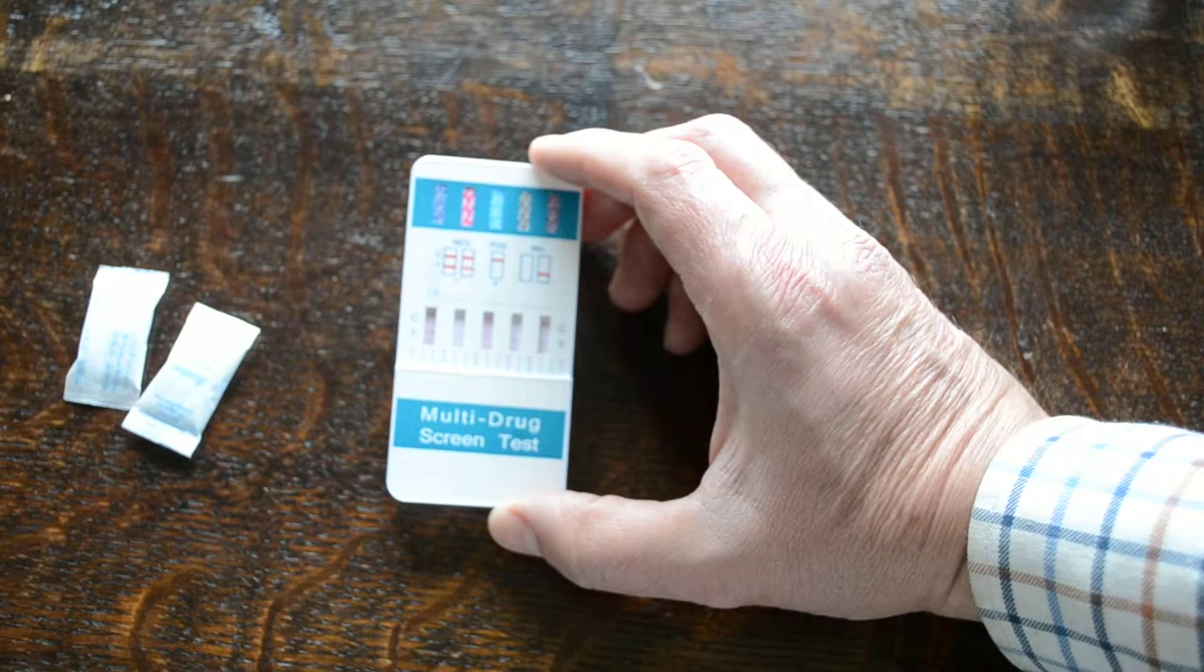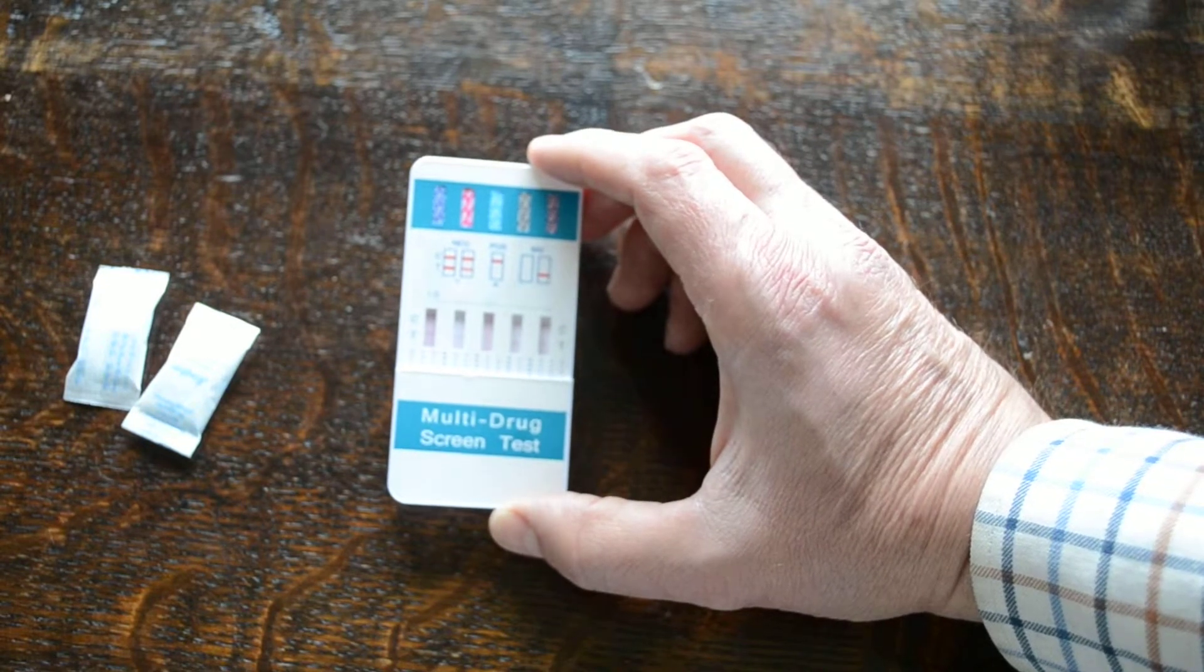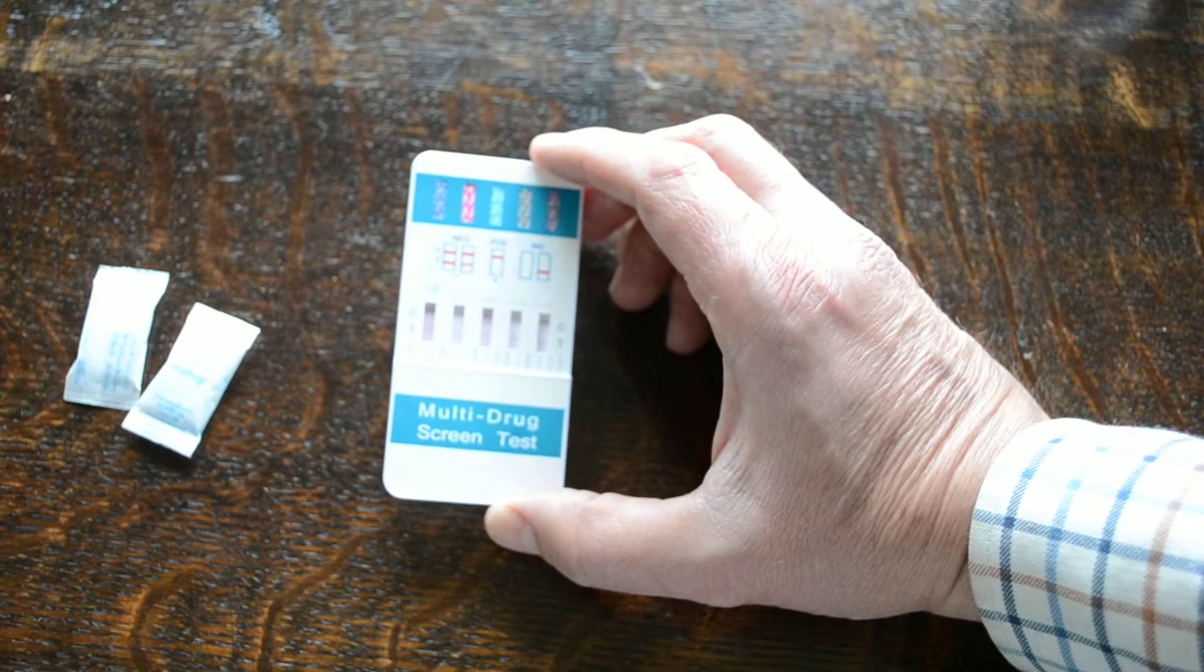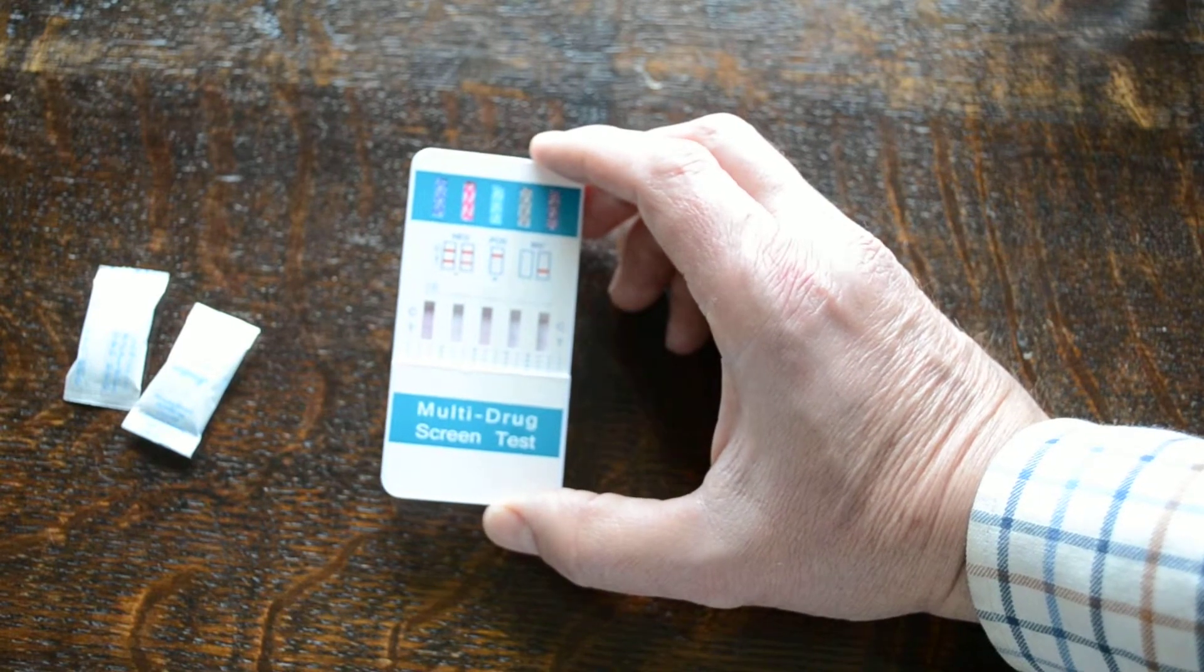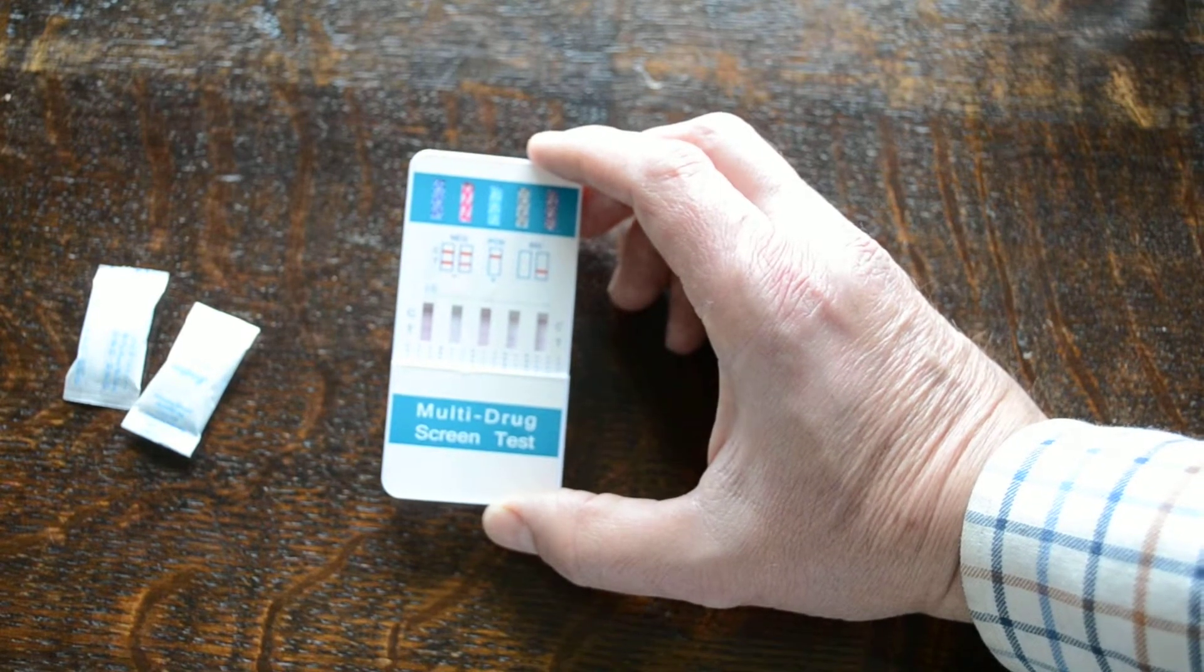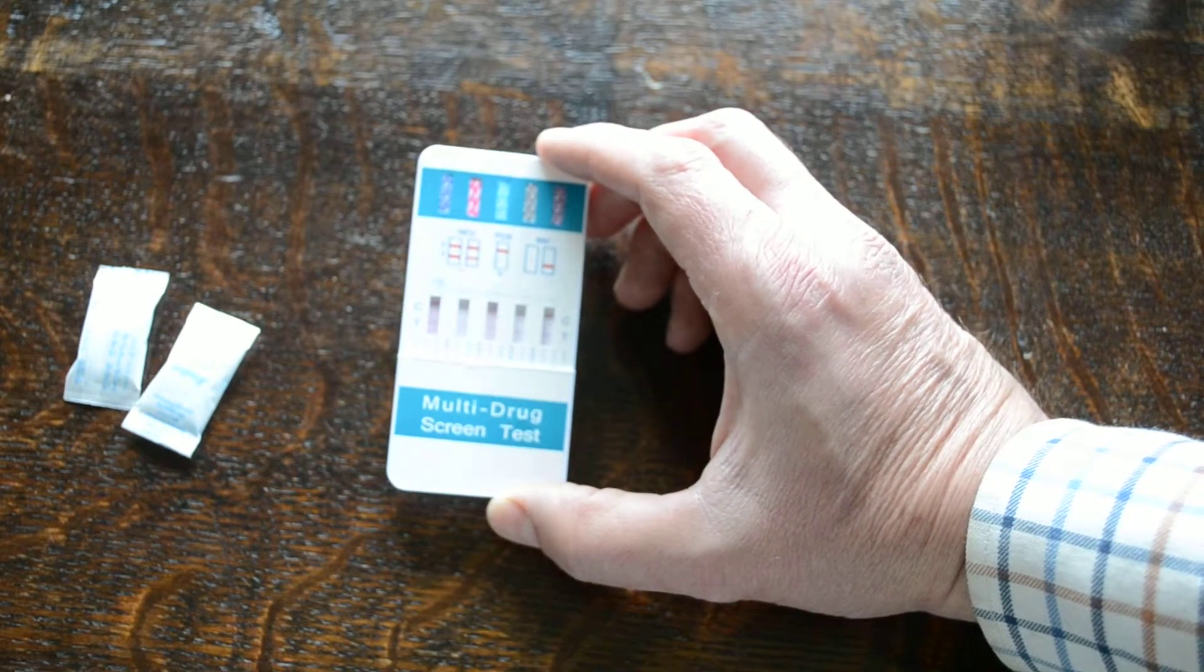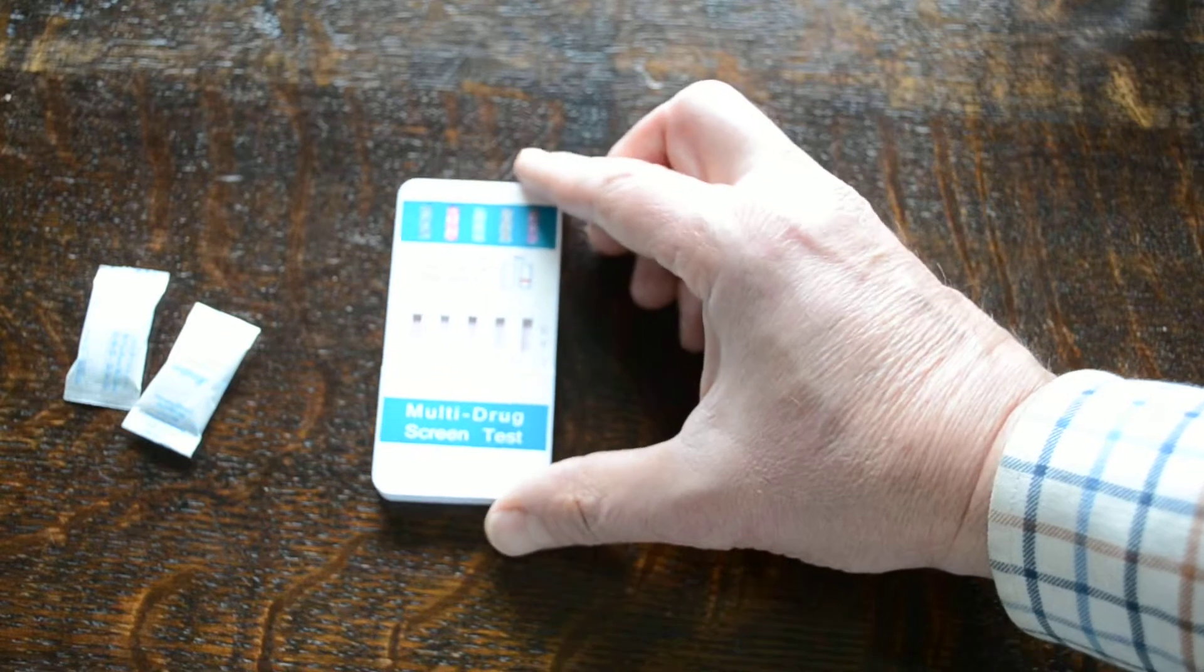Now it's a competitive binding technology, so basically if there's no drug in the system, dye is going to bind at the test line. So you're getting two lines for a negative result and a control line with no test line showing at the indicative period for this test, indicating a positive result.